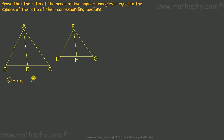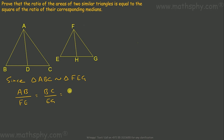Since triangle ABC is similar to triangle FEG, in that case AB over FE will be equal to BC over EG, equals to AC over FG. And all the corresponding angles will also be equal. I will take only angle B equals to angle E, though other corresponding angles are also equal.